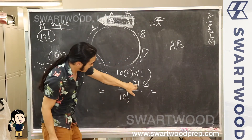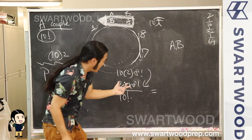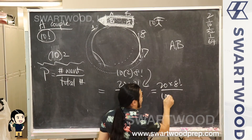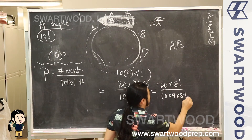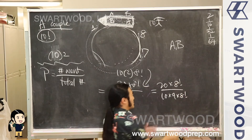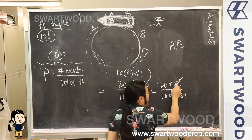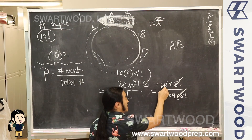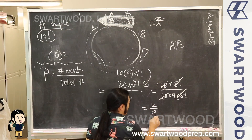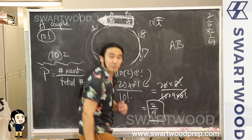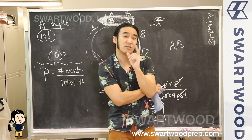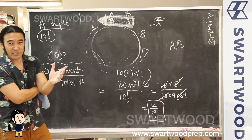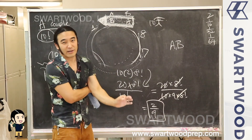Eight factorial cancels eight factorial on down. Let's write it out: it's 20 times 8 factorial over 10 times 9 times 8 factorial, because that's really what 10 factorial is. Then we chop these off — divide top and bottom by 10 — and the answer we get is 2 over 9. The thing that's nice about this is as long as you have a good model and think it through logically, no matter how you do it, you will get the right answer.